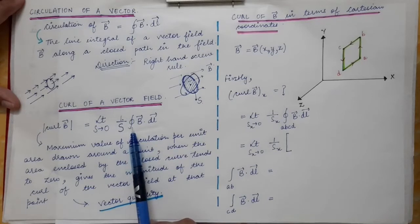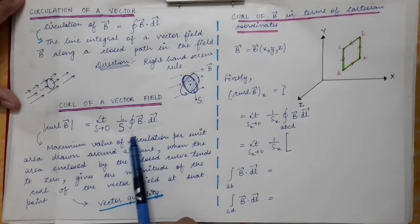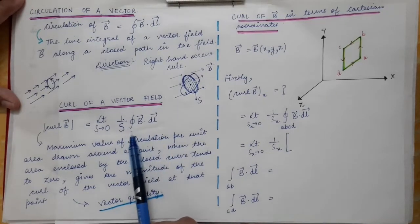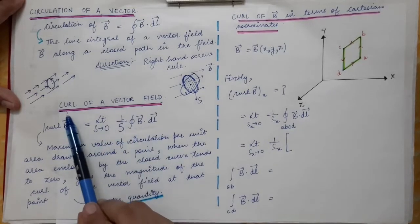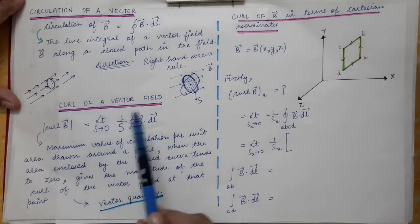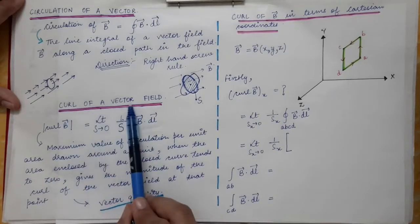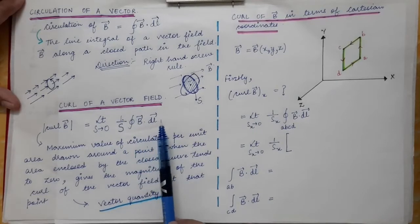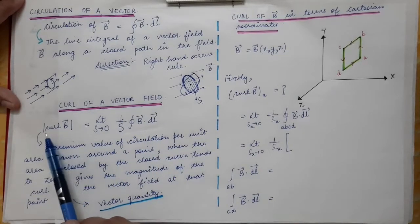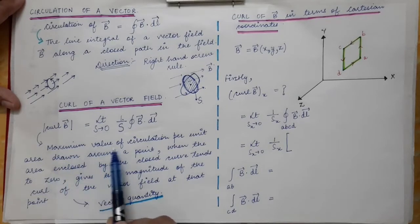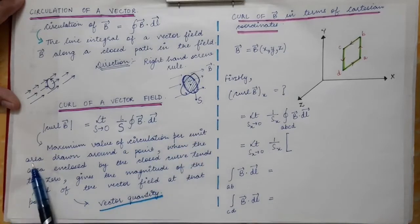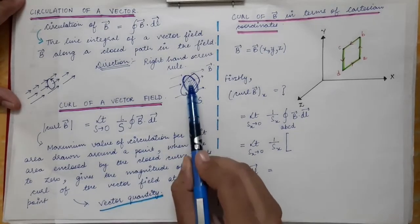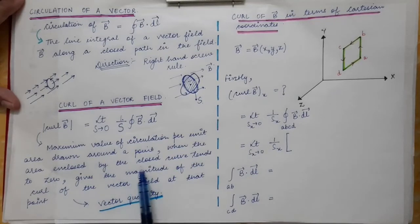The curl of a vector field is a vector quantity. Its direction is given by the right-hand screw rule and is the same as that of the circulation used in the definition. The circulation of a vector points in the same direction as the area vector, and the area vector is always perpendicular to the surface. So the curl of the vector field always points along the circulation, which is maximum circulation per unit area drawn around a point as the enclosed area S tends to zero.